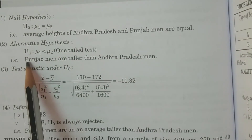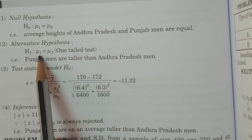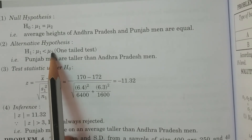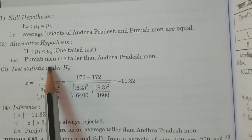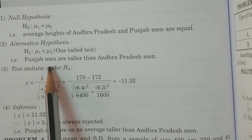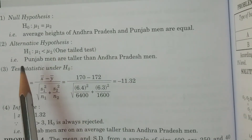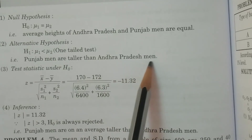The alternative hypothesis H1: μ1 < μ2 — this is a one-tailed test. Here μ1 represents the average height of Andhra Pradesh men and μ2 represents the average height of Punjab men. Since the question asks whether Punjab men are on average taller than Andhra Pradesh men, we set H1: μ1 < μ2, meaning Punjab men are taller.